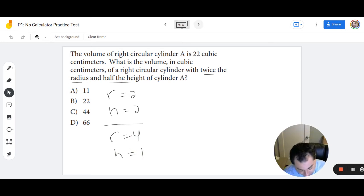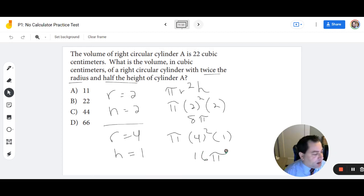So the formula for the volume of a cylinder is pi times the radius squared times the height. So in this case, we're going to do pi times 2 squared times 2. So this is 2 squared is 4. 4 times 2 is 8. So this is going to be 8 pi. Over here, we have pi times 4 squared times 1. 4 squared is 16. 16 times 1 is 16. This is going to be 16 pi. Well, what's the change? 8 to 16 is double. So double 22 would be 44, which is C.